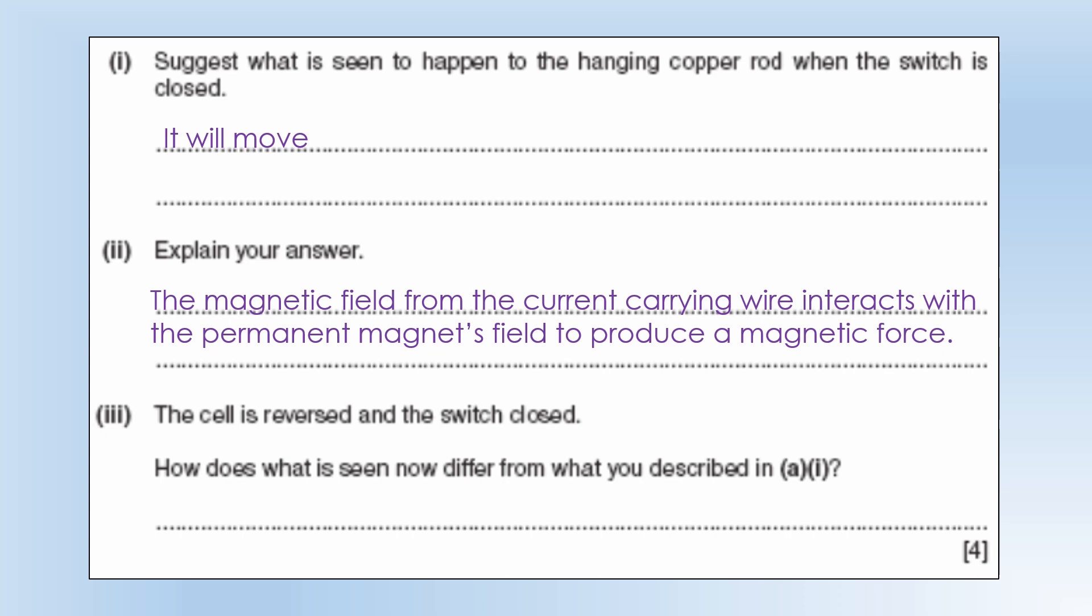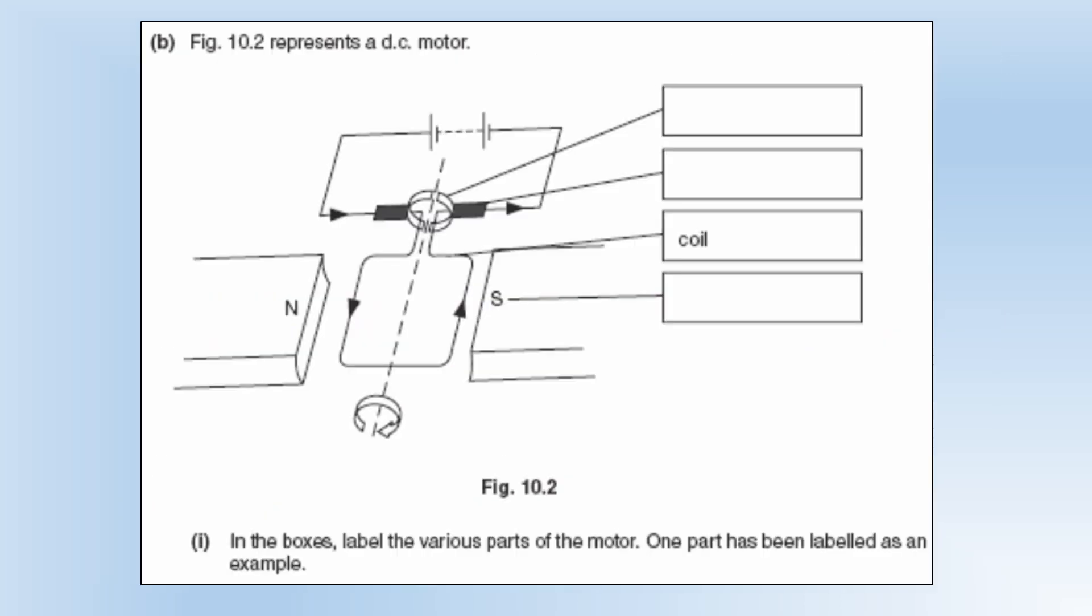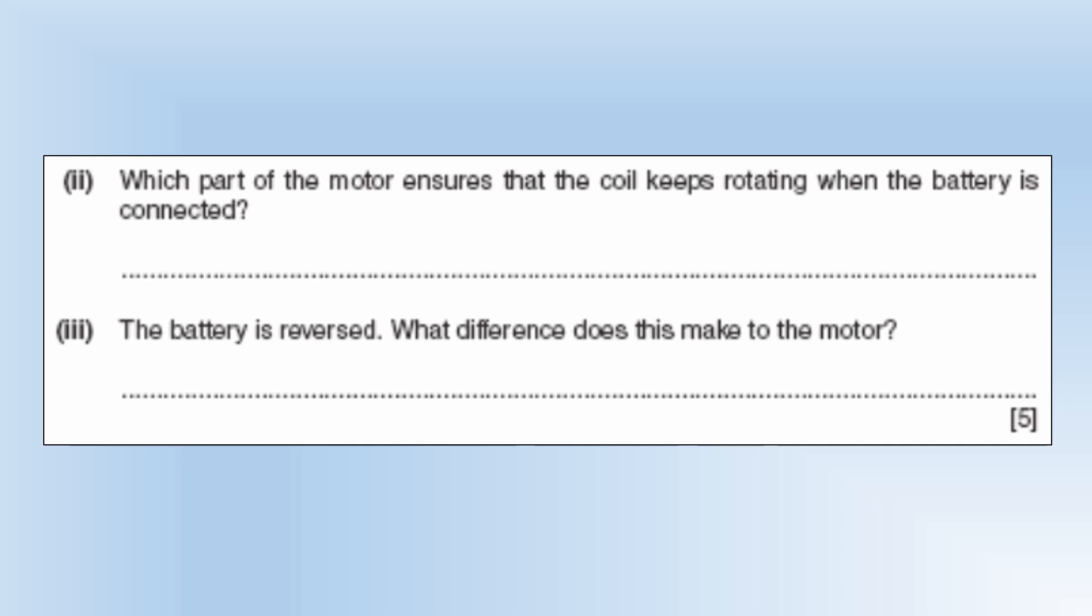The cell is reversed and the switch is closed. How does what is seen differ? Well it's going to move in the opposite direction. Fairly simple. The diagram represents a DC motor. So we need to label the parts. The top box is labelling the split ring commutator. You can see the splits in the top and the bottom. Connected to the commutator is a brush or the brushes. There are two of them. And then the final part is the permanent magnet there. Which part of the motor ensures the coil keeps rotating when the battery is connected? It's the split ring commutator. The battery is reversed. What difference does this make to a motor? Well it spins in the opposite direction.